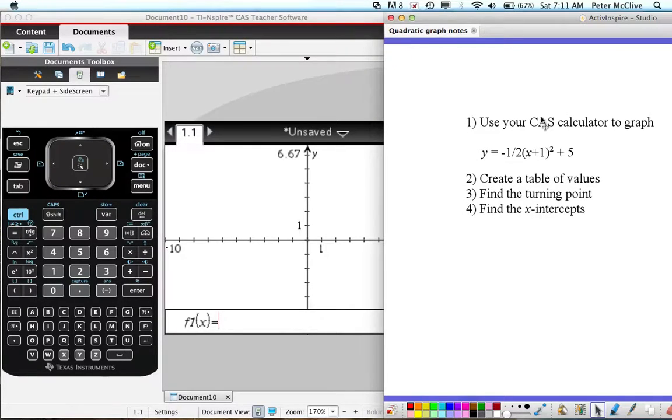I've got a question here that says use your CAS calculator to graph y equals minus one-half brackets x plus 1 all squared plus 5, and as well as that you need to create a table of values, find the turning point, and find the x-intercepts.